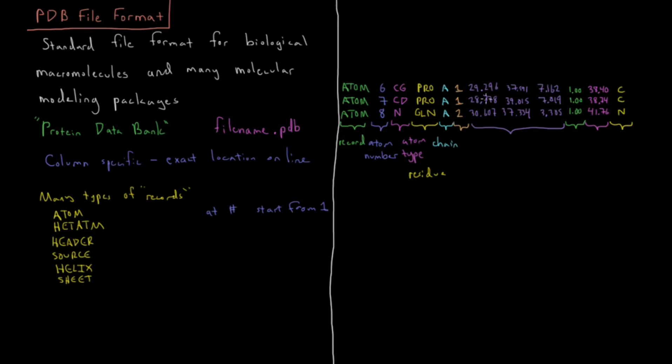Next column is the residue number. This is indicating that proline is the first amino acid in this chain, glycine is the second, et cetera. That'll start at one and ascend as well. Residue number starts from one.